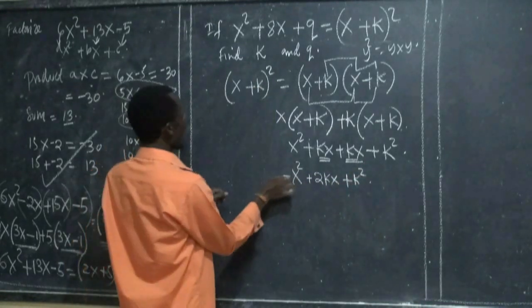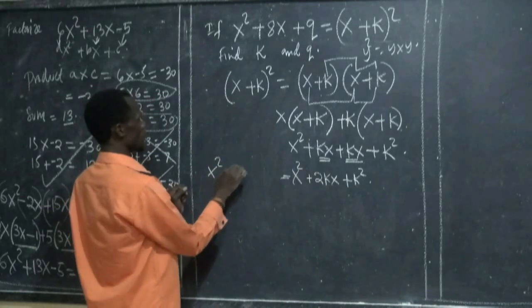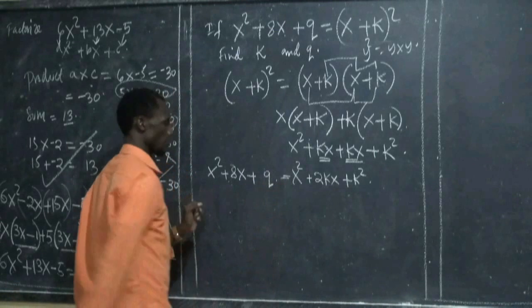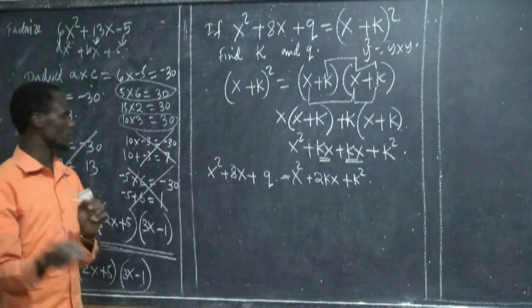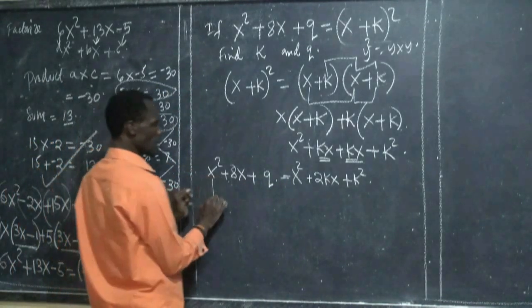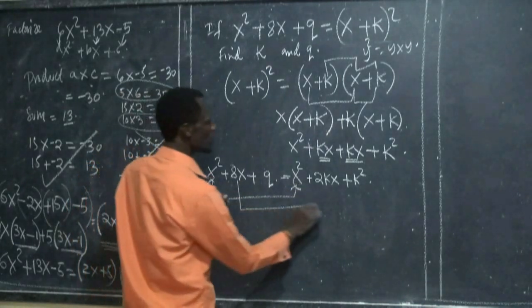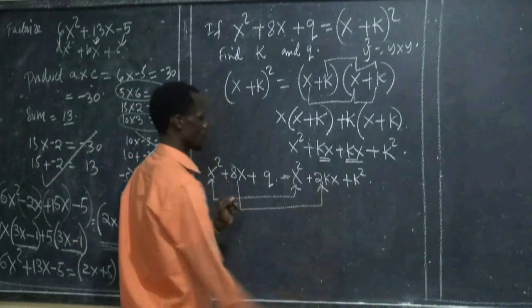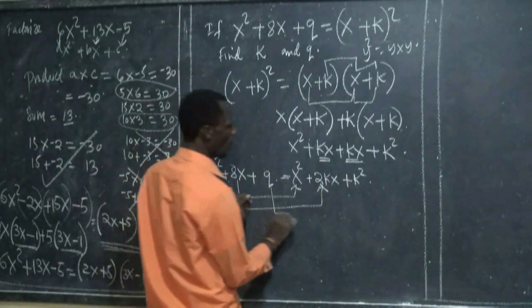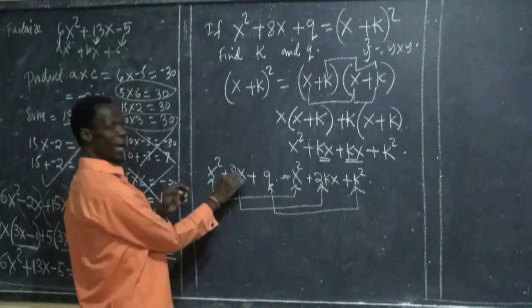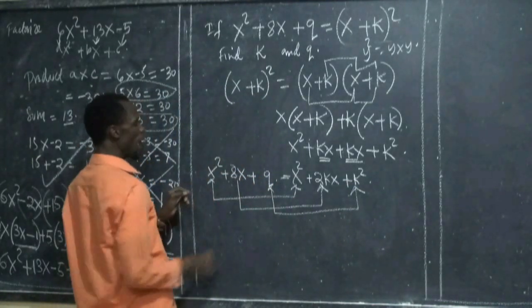This is equal now to x squared plus 8x plus q. This is what we have. So this implies what? This is equal to this one. Then 8x is equal to 2kx, and q now is equal to k squared. Now we start by comparing them. By comparison.